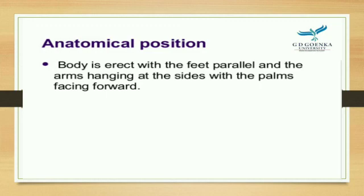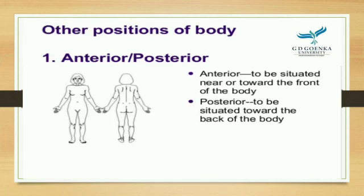Anatomical position: the body is erect with the feet parallel and the arms hanging at the side with the palms facing forward. Anterior means to be situated near or towards the front of the body — anterior means forward. Posterior means to be situated towards the back of the body — posterior means backward.